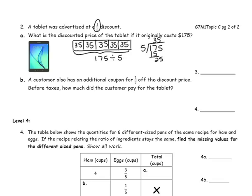Since we're getting one fifth off, we have to pay for the four fifths. So we have 35 times 4. Recalling the half and double rule: half of 4 is 2, double 35 is 70 — so these will have the same product. And the answer is $140.